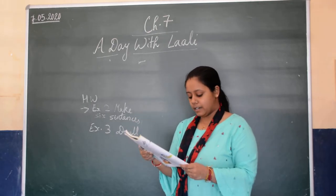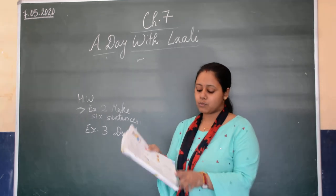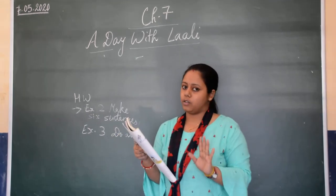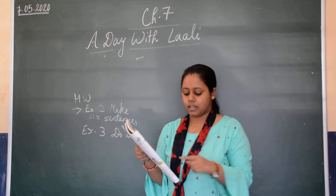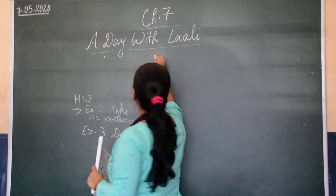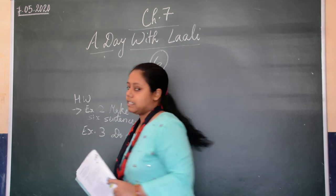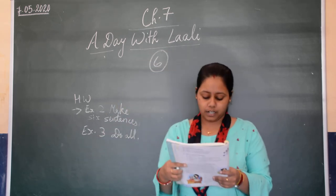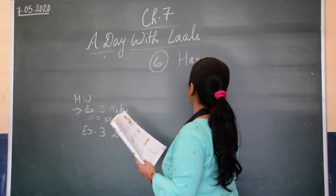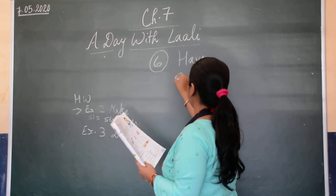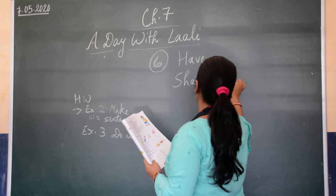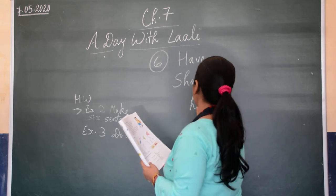Now we come to exercise number six — number five is not needed, skip it. Number six has already been discussed by me. That is, where we have to use have, where we have to use shall have, and where we have to use had.